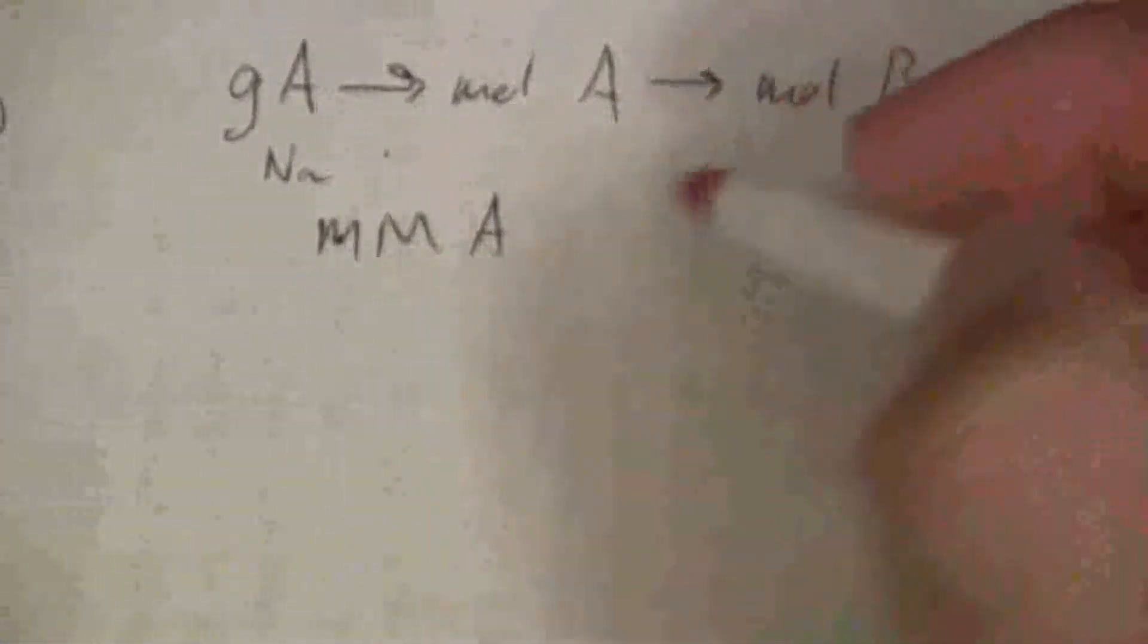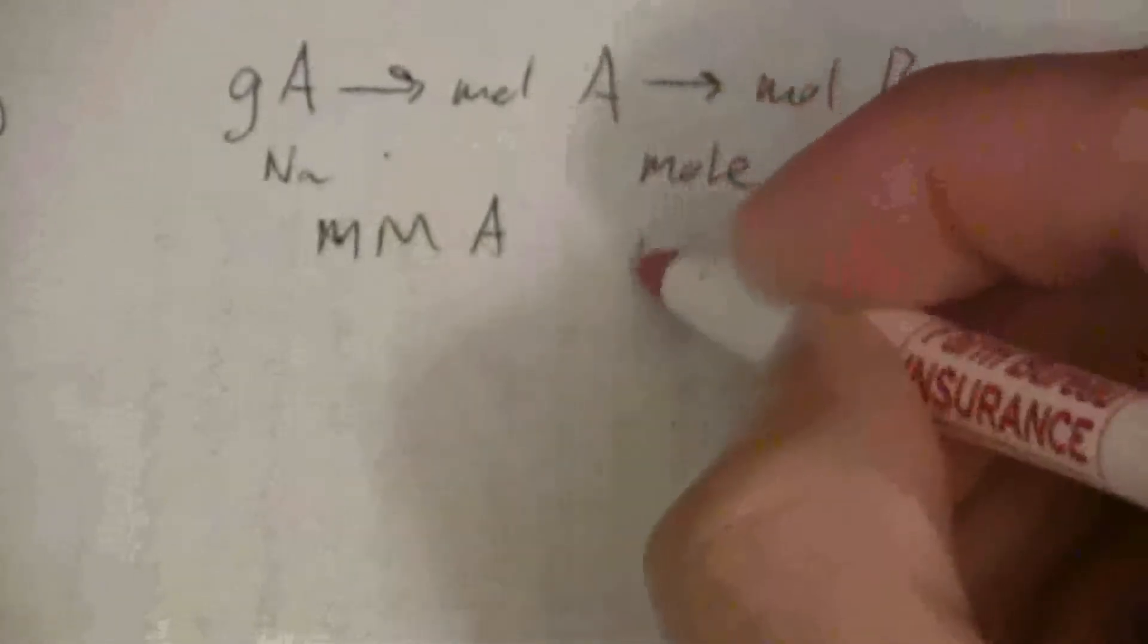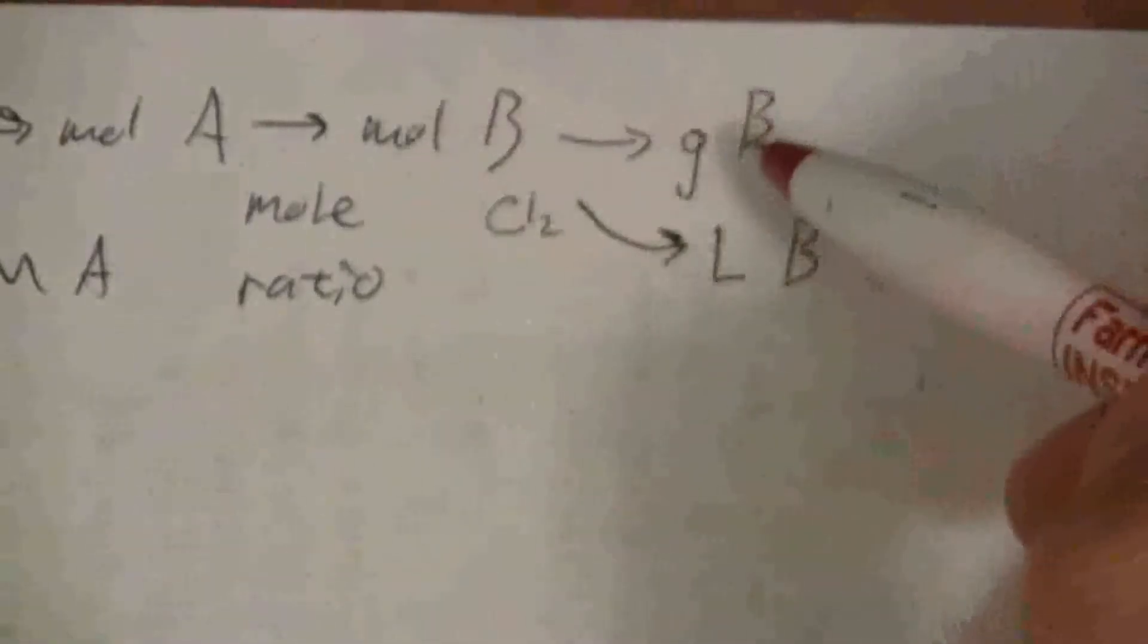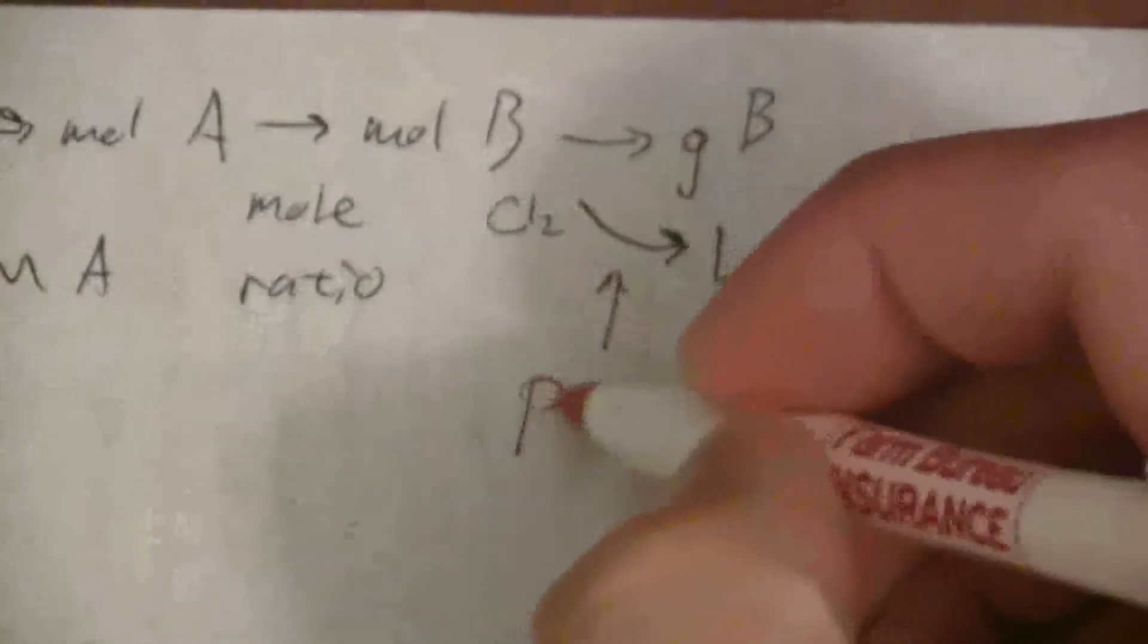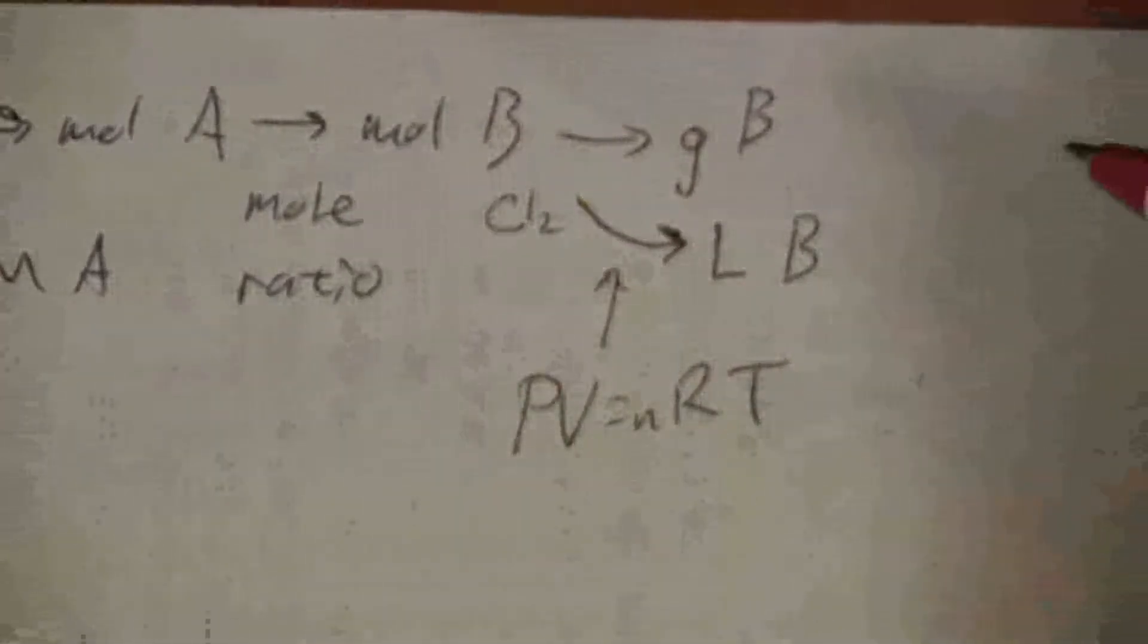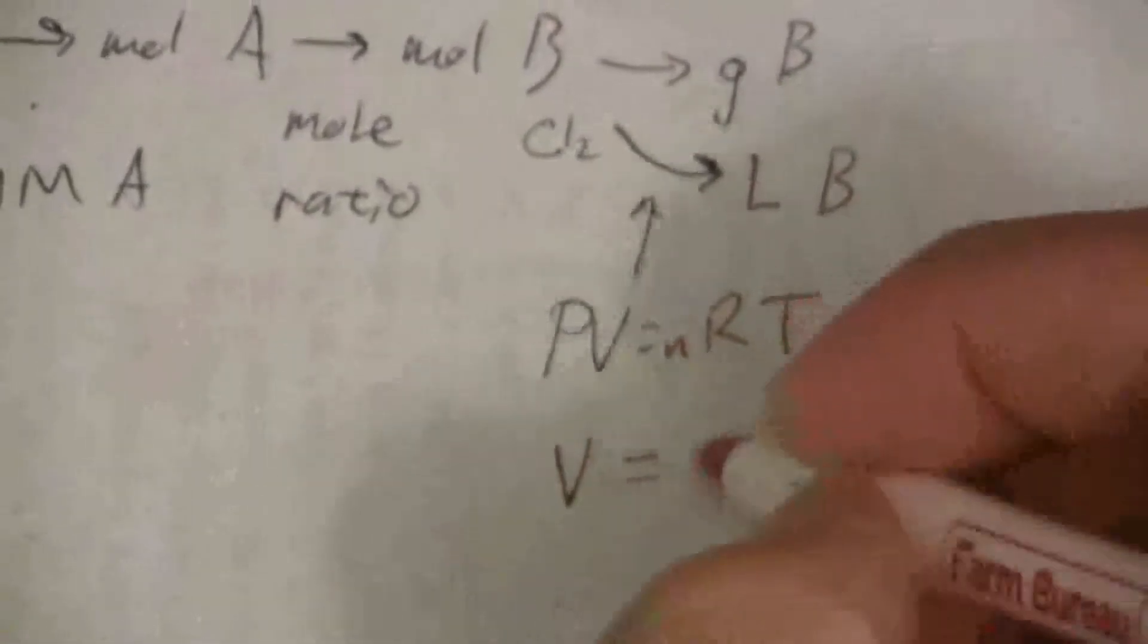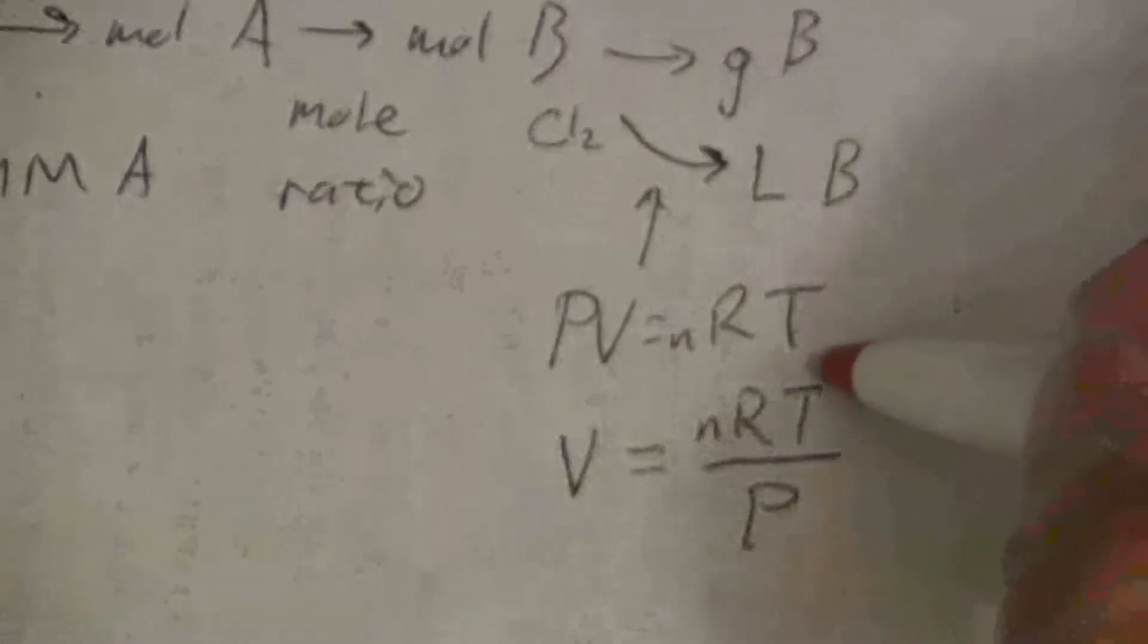So let's see how we're going to do this. To go from grams to moles, of course, I use the molar mass of A. To go from moles to moles of a different substance, I use a mole ratio from the balanced equation. And I would use the molar mass to go to grams, but to go to liters, I have to use PV equals nRT.